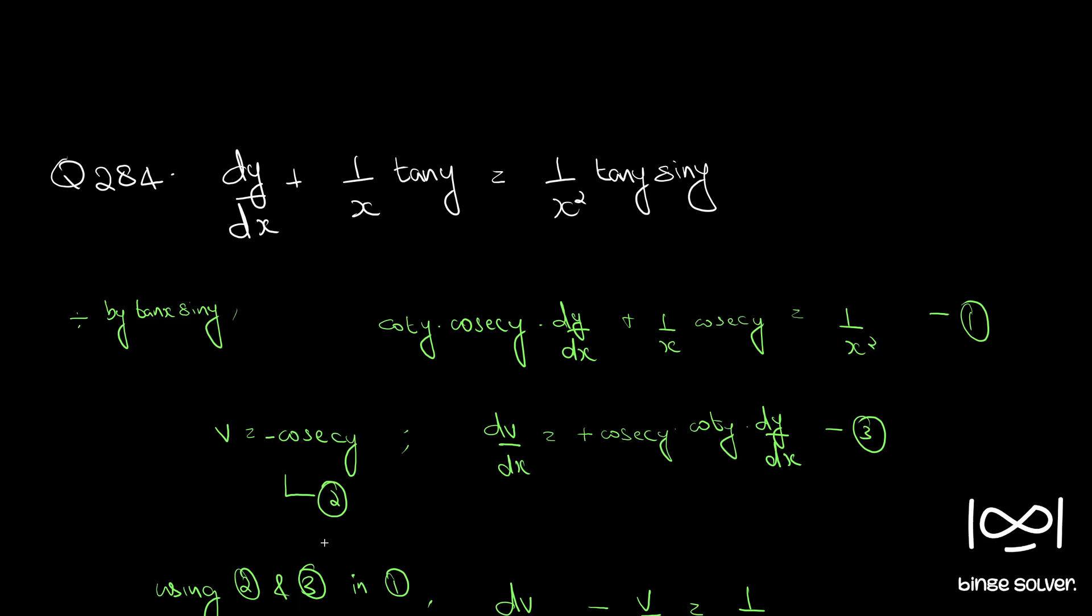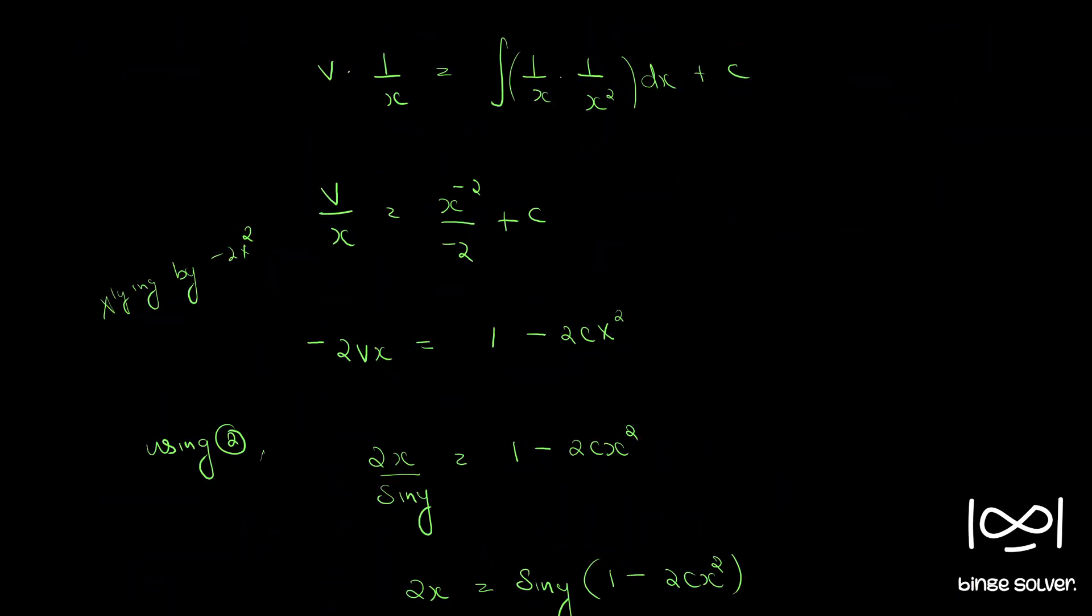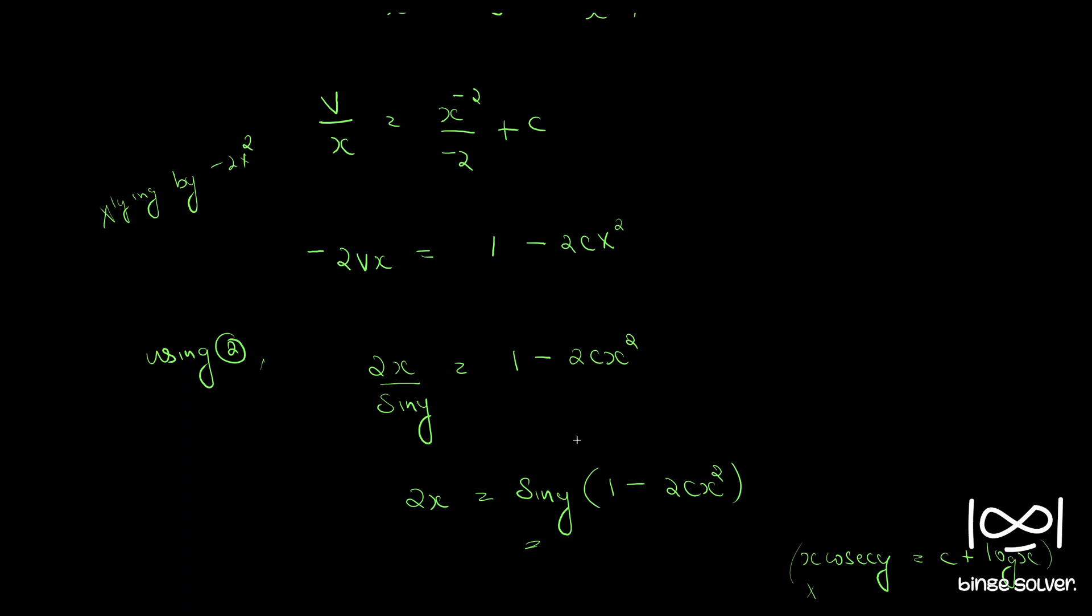And when we substituted back, we used this minus sign. Okay. Anyway, the steps look correct to me. And this is the answer we got: 2x equals sin y into 1 minus 2cx². If there is any mistake, do point to mention in the comment and I will redo the video.